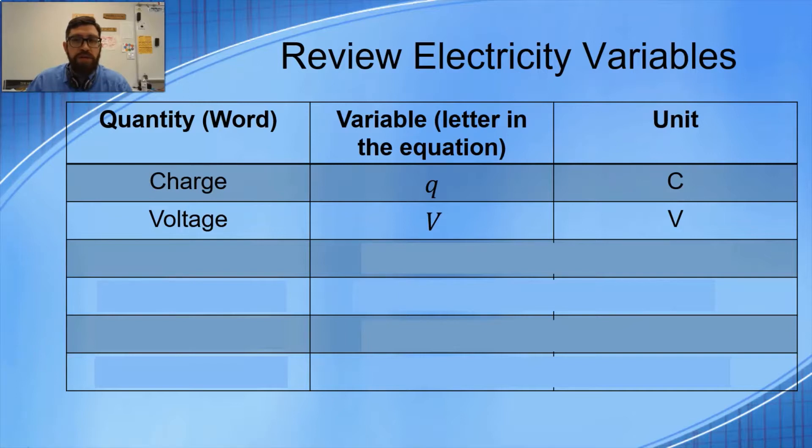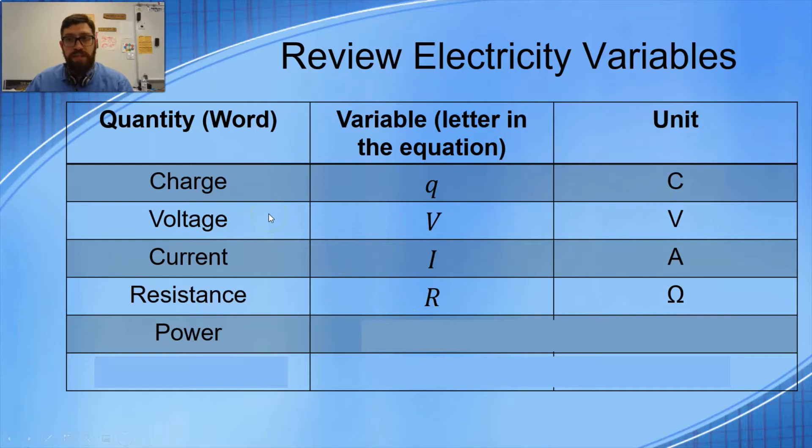Some people get confused by this one. Current is not C. Current - the variable is I, capital I, and the unit is capital A, which stands for amps. Resistance: the variable is capital R, and the unit is omega, which is ohms. This Greek letter omega - ohms is the unit for resistance. Power: we've already done this one before in this class. The variable for power is capital P, and the unit is capital W, which is watts. Watts is the unit for power. And then energy.